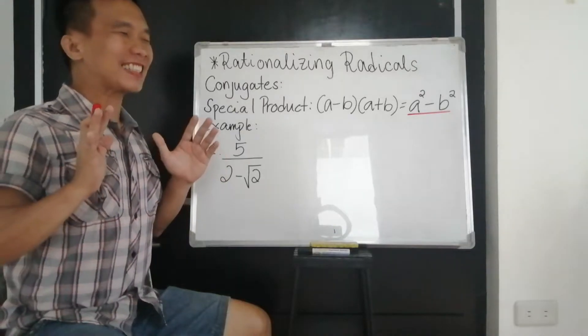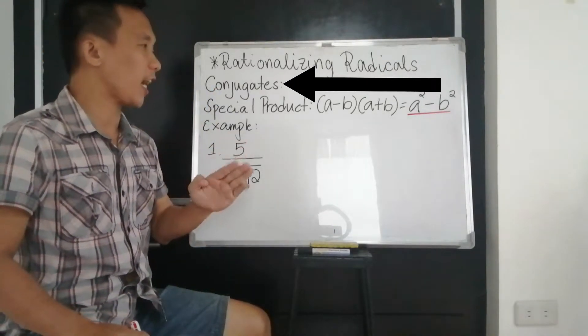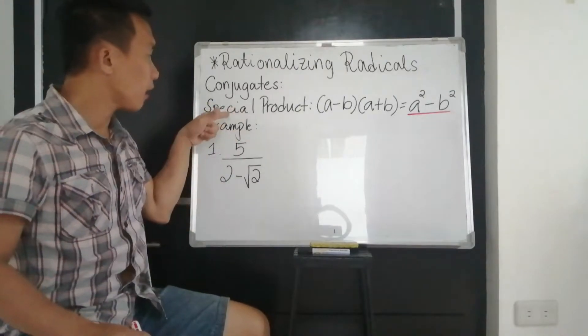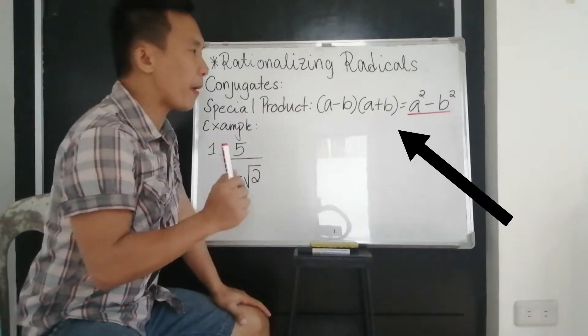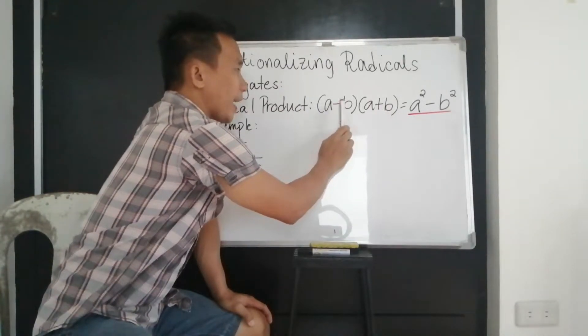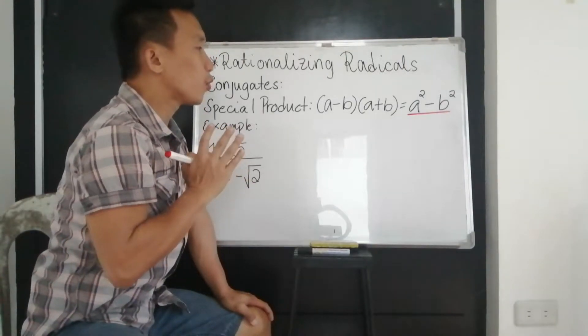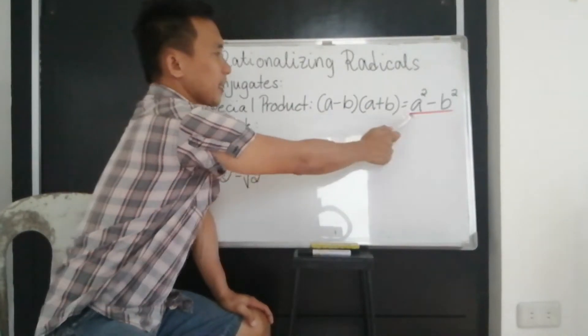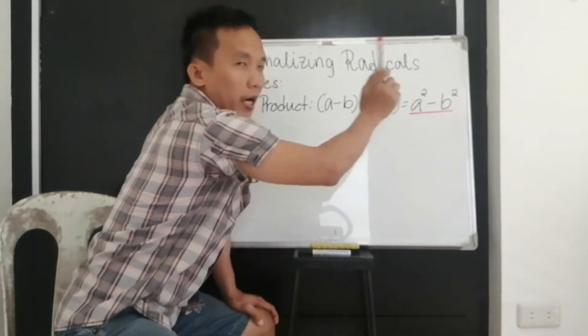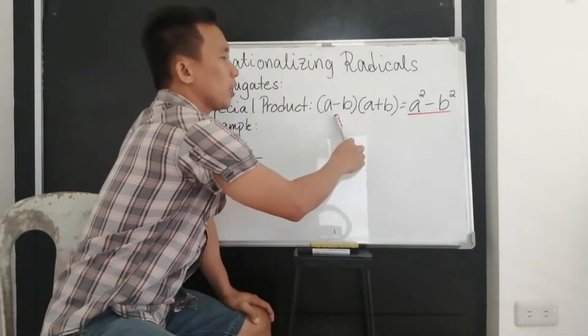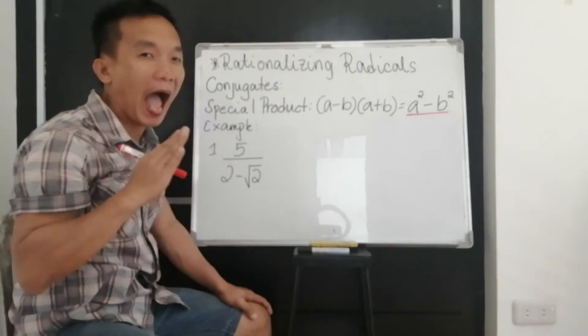So now, let us discuss conjugates. In conjugates, it is important for us to know this special product. If we have two binomials and they are minus and plus, our shortcut answer will be just get the squared of A minus the squared of your B. So if you are going to multiply these two binomials, this is just your answer.